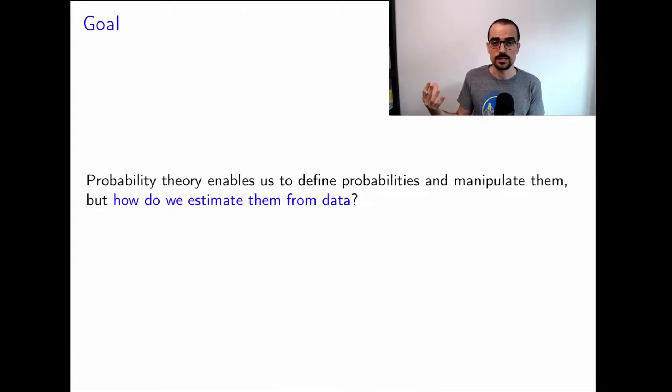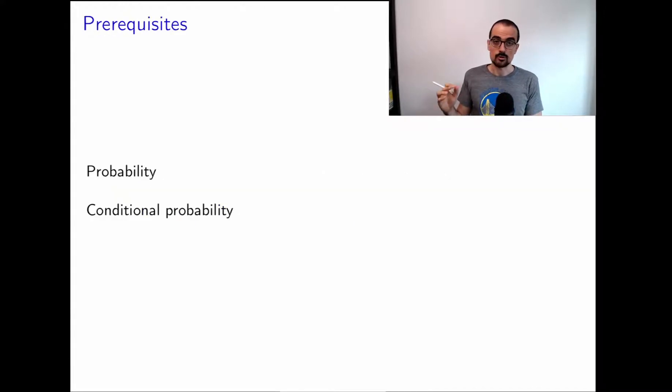Up to now, we have introduced important concepts in probability theory: probability spaces, conditional probability. But we don't know what to do if we get some data. So we're going to try to remedy that to some extent. We're going to basically have to figure out how to estimate probabilities from data. The prerequisites for this material are probability and conditional probability. You have to be familiar with the definitions of these concepts and their properties in order to actually know what we are estimating.